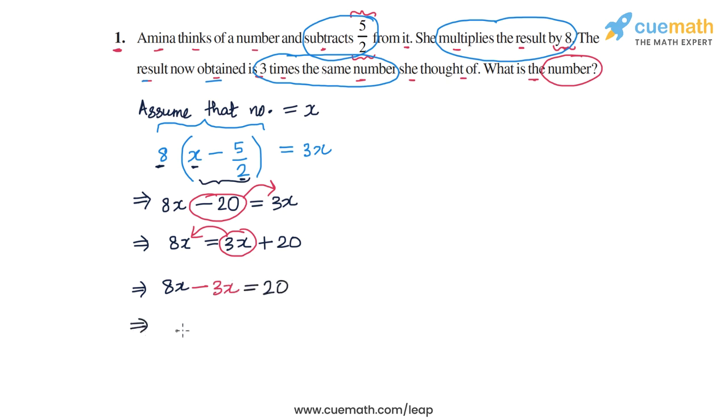So this will give us 8x minus 3x or 5x. So 5x is equal to 20. So finally, let's divide both sides of this equation by 5. So we will get x is equal to 20 divided by 5. So 20 by 5, and this is 4. So we will get x is equal to 4.